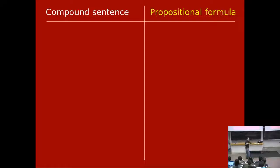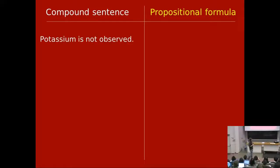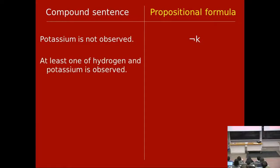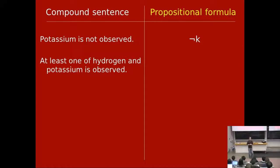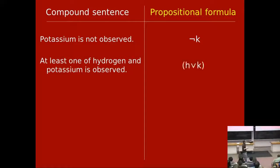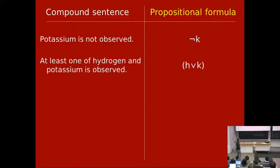Those are basic sentences captured by propositional variables — sentences that can be either true or false. The next step is to model compound sentences. For example, 'Potassium is not observed' would be modeled as not K, written as the not-sign followed by K. Or 'at least one of hydrogen and potassium is observed' — can somebody tell me how we'd model that? K or H — that's right. H or K is also the same thing, as we'll see eventually.